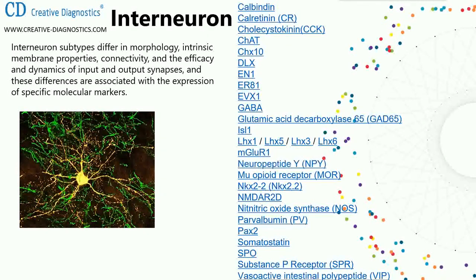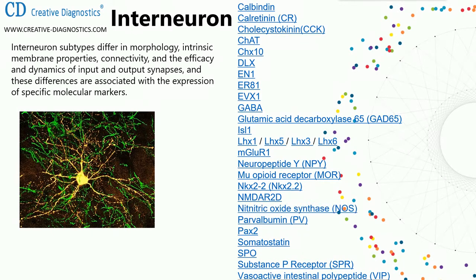Additional interneuron markers include neuropeptide Y, neuropeptide receptor, NKX2.2, nNOS (nitric oxide synthase), parvalbumin, Pax2, somatostatin, SP0, substance P receptor, and vasoactive intestinal polypeptide (VIP).